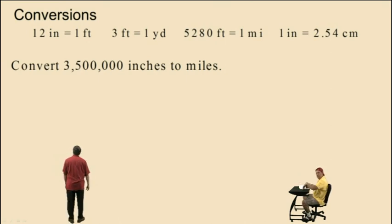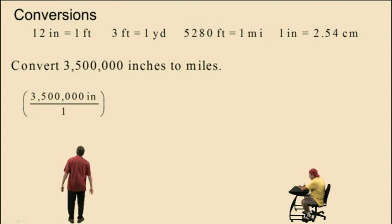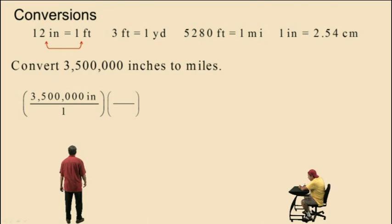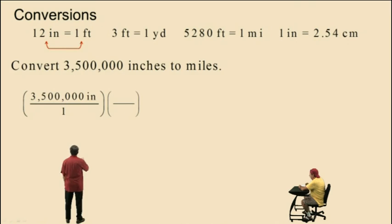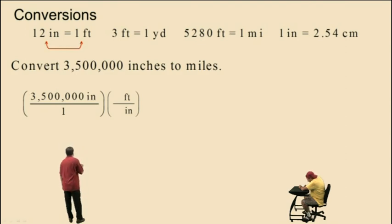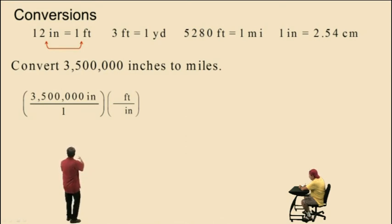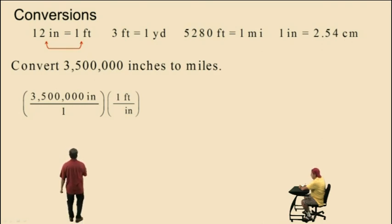Let's get started. First, we take our given quantity, 3,500,000 inches, and write it as a fraction — we simply put it over 1. Now we bring in our first conversion factor, which is going to convert our inches to feet using the equivalent relationship 12 inches equals 1 foot. Notice we put the dimensions of inches in the denominator of our conversion factor, because we want those inches to cancel. We put feet in the numerator. The numeric values come from our equivalent relationship, and the ratio of feet to inches is 1 to 12. Notice the dimensions of inches cancel, leaving us with dimensions of feet.